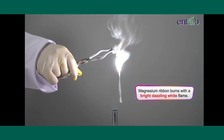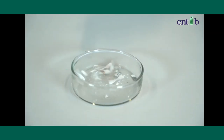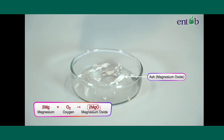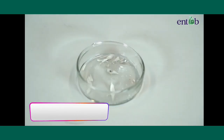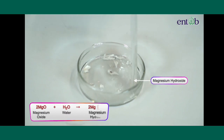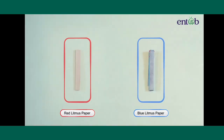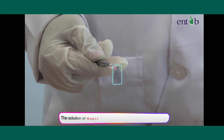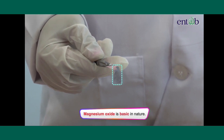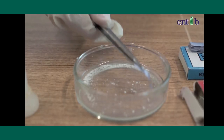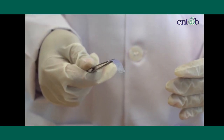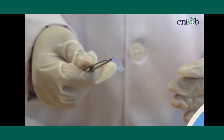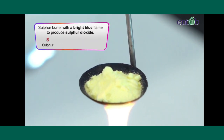The temperature at which a substance catches fire or starts burning is called its ignition temperature. Magnesium when burnt leaves a white powdery ash — this powder is magnesium oxide. If we test the solution of magnesium oxide and water with red and blue litmus papers, we would observe that the solution turns red litmus blue, meaning it is a basic oxide.